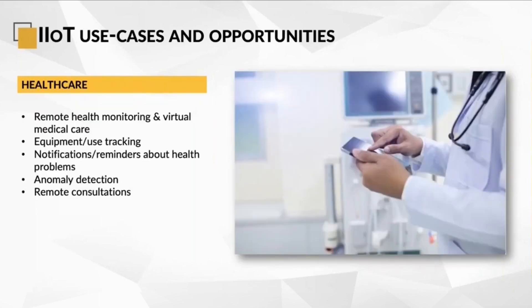Let's talk about IoT in healthcare. It is also referred to as IoHT, which is Internet of Health Things. It's rapidly transforming the healthcare landscape as it enables remote health monitoring. Accurate health updates can be tracked with telemetries like blood pressure, heart rates, and blood glucose values. Notifications and reminders about health problems is also a key use case, especially in senior or elderly care. Anomaly detection is enabled, and also remote consultations.